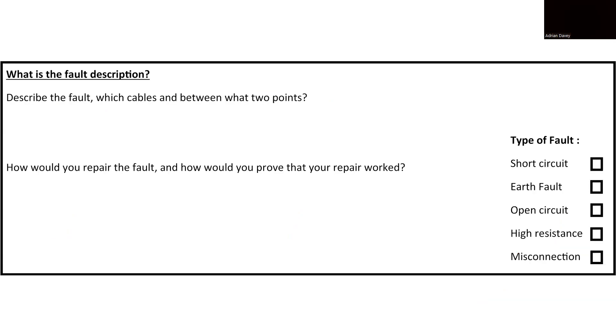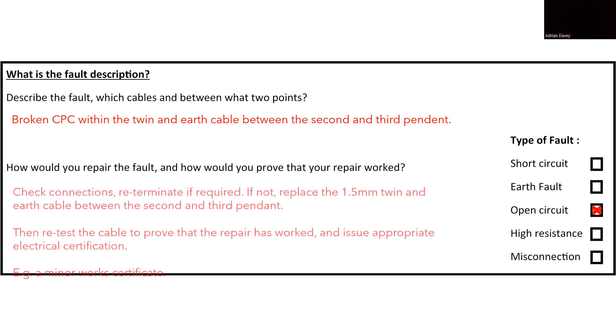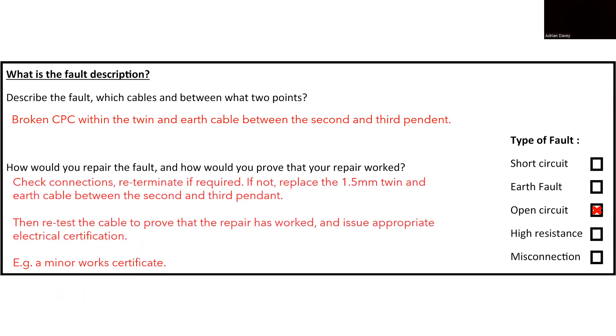If we were required to write a report on the fault to provide feedback to the person who requested the work, the report could be structured as following. A broken circuit-protected conductor has been identified between the second and third pendant. This issue allows us to classify it as an open circuit, and to rectify this, we can replace the 1.5 mm twin-and-earth cable running between second and third pendant, since the CPC is an integral part of this cable. If the circuit was wired using single-core conductors enclosed in trunking or conduit, we would simply replace the individual cores.